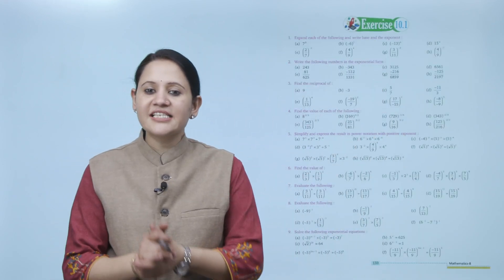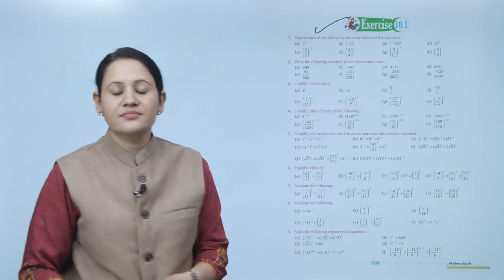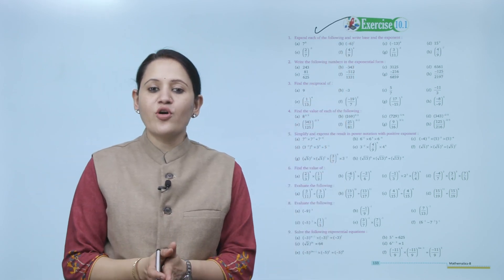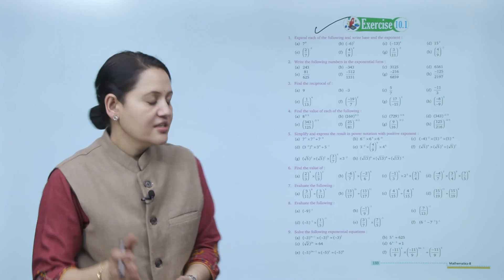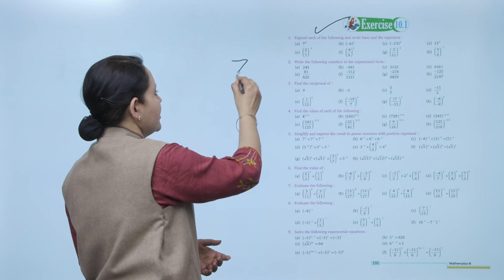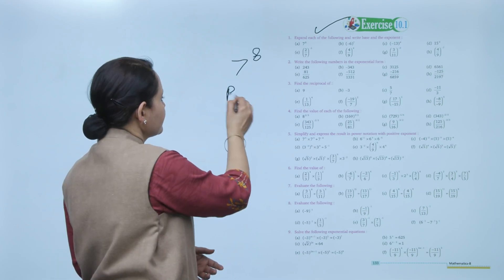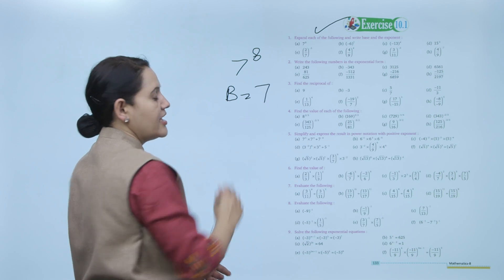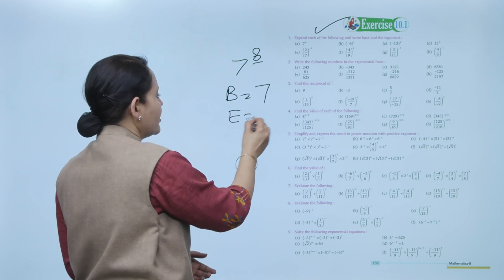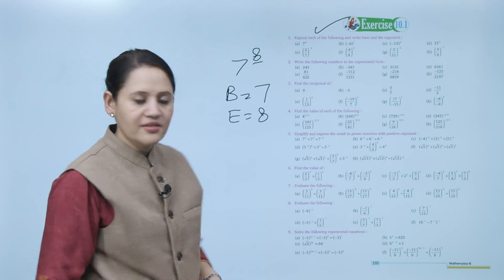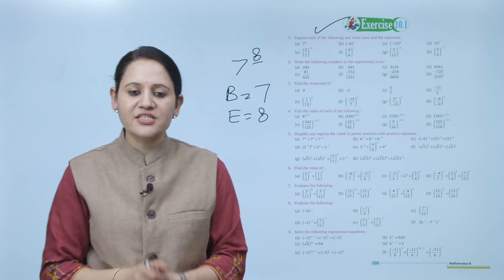Next is Exercise 10.1: expand each of the following and write the base and exponent. For example, 7 to the power 8 — here the base is 7 and the exponent is 8. You have to practice all the questions of this exercise.